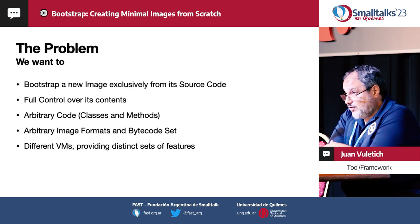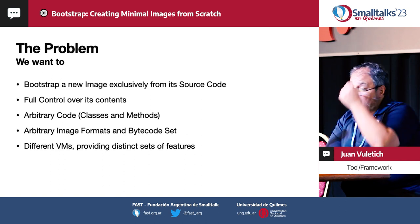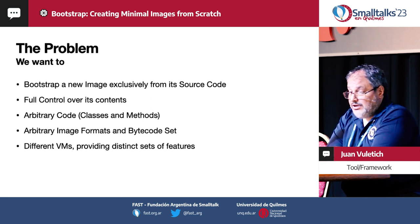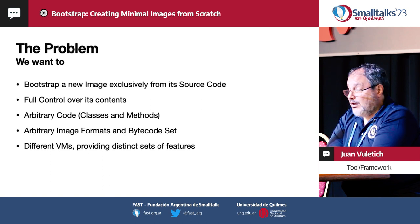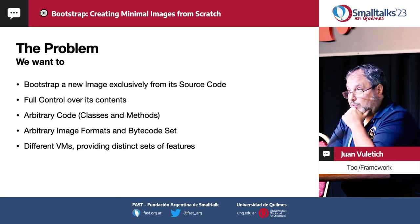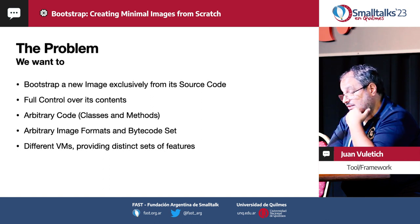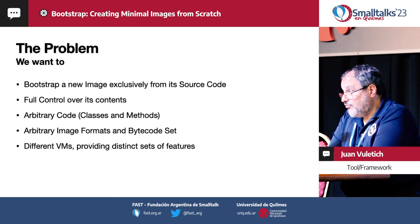What is the problem we are trying to solve here? We want to bootstrap — to build new images — new images exclusively from their source code. We want to have full control over their content. We want to include arbitrary code, any classes and methods we want. We want also to support arbitrary image formats and bytecode sets. And we want to support different VMs that may provide a different set of features.